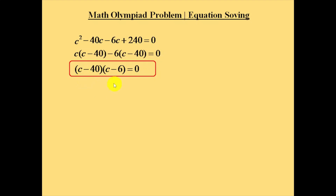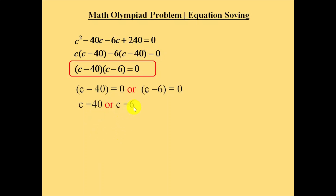That will become c minus 40 into c minus 6 is equal to 0. So from this, either c is equal to 40 or c is equal to 6, since at least one factor must equal zero.